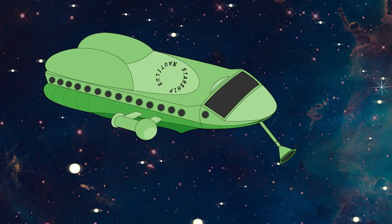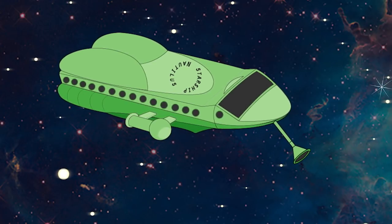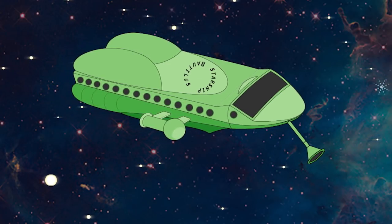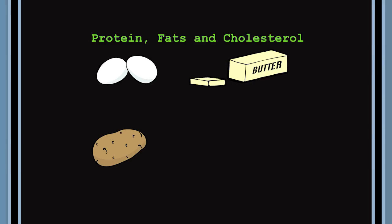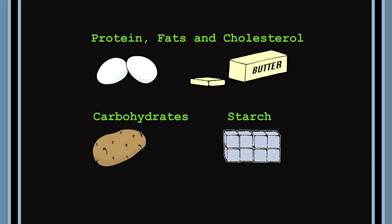Suppose you open the hatch and deliver a meal of scrambled eggs cooked in butter and potatoes fried in lard. That meal contains proteins, fats, cholesterol, and carbohydrates. The carbohydrates are in the form of starch, which means glucose molecules bound together.